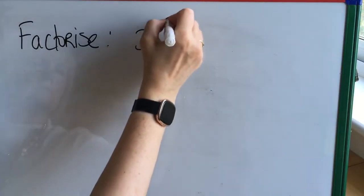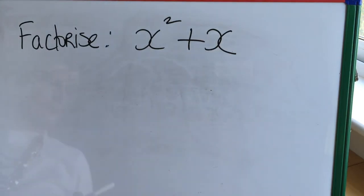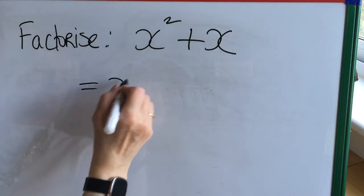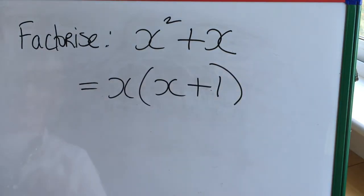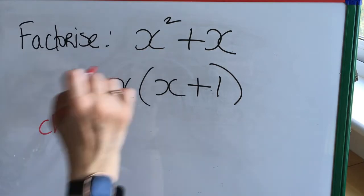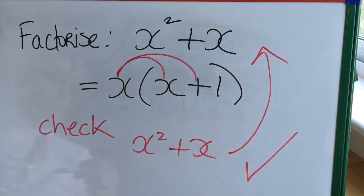And here's the final one. And this one again we have to be careful that it's 1x squared plus 1x. So the highest common factor is x and the other factor of the expression is x plus 1. And remember x plus 1 itself is an expression. I'm checking our answer and we're correct.